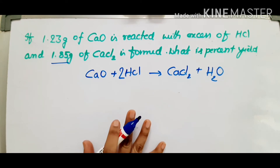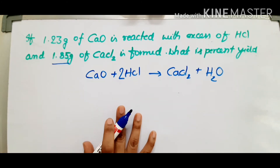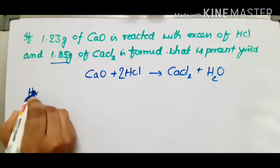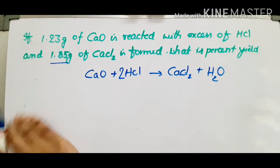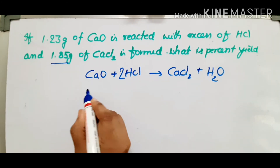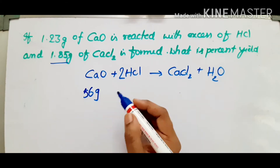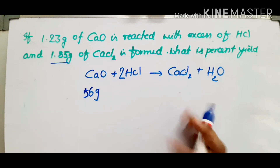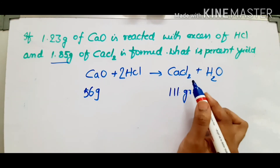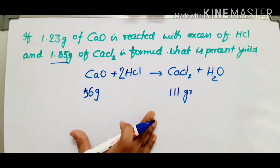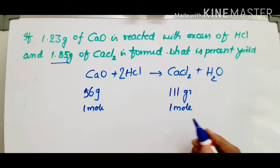Now, interpret the mass and moles. MR — relative molecular mass — of calcium oxide is 56 grams: calcium is 40 plus oxygen 16 equals 56. CaCl₂ molecular mass: calcium 40 plus chlorine 2×35.5 equals 111 grams. That is 1 mole of calcium oxide gives 1 mole of calcium chloride.